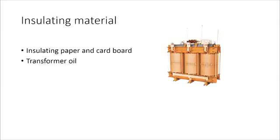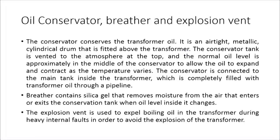Transformer oil is another insulating material that performs two important functions: in addition to insulation, it also cools the core and coil assembly. The transformer's core and winding must be completely immersed in the oil. Normally, hydrocarbon mineral oils are used as transformer oil. Oil contamination is a serious problem because contamination robs the oil of its dielectric properties and renders it useless as an insulating medium.